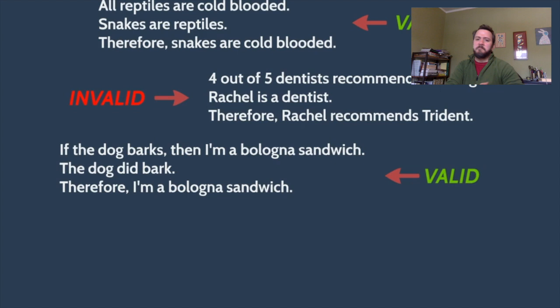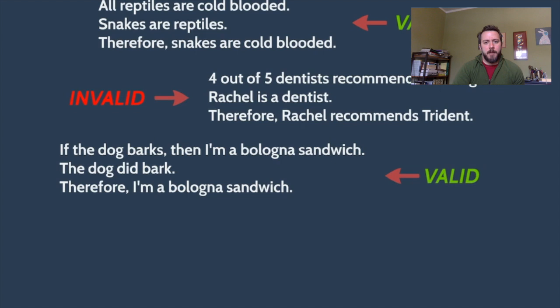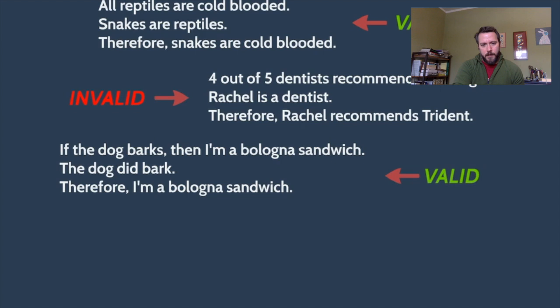Now consider: 4 out of 5 dentists recommend Trident gum. Rachel is a dentist. Therefore, Rachel recommends Trident. It seems likely, but because it's only 4 out of 5 dentists — not all dentists — there's a possibility that Rachel is that 1 out of 5 who doesn't recommend Trident. So this argument is invalid. It might be a very good inductive argument, but it's a terrible deductive argument — it doesn't get to certainty about the conclusion on the basis of the premises.